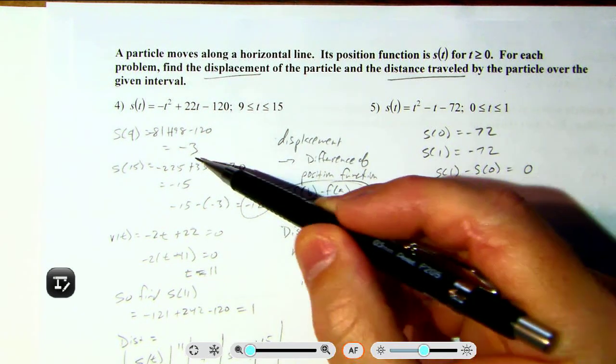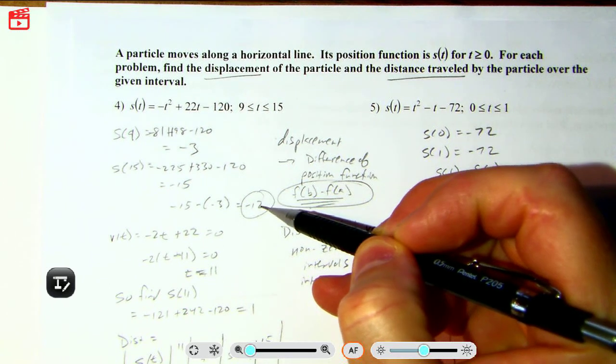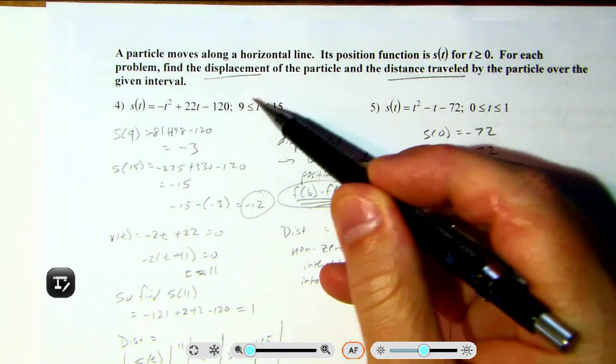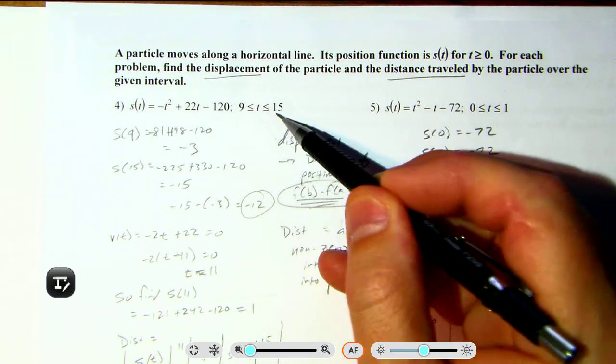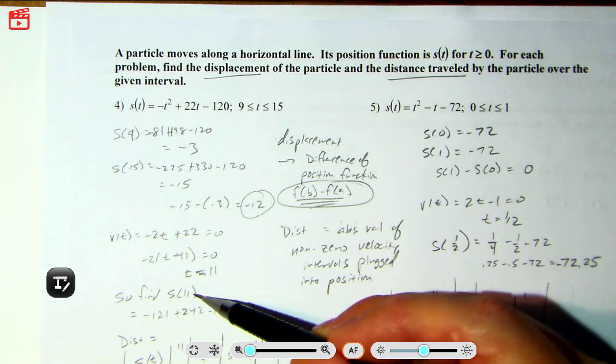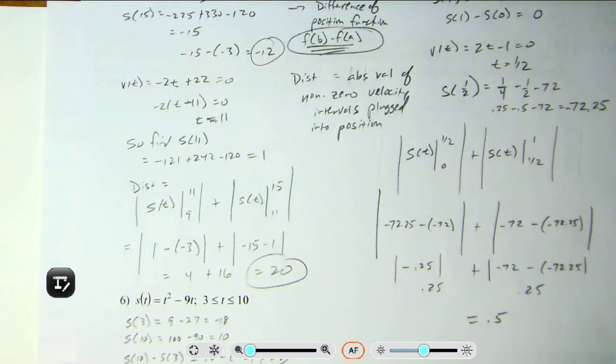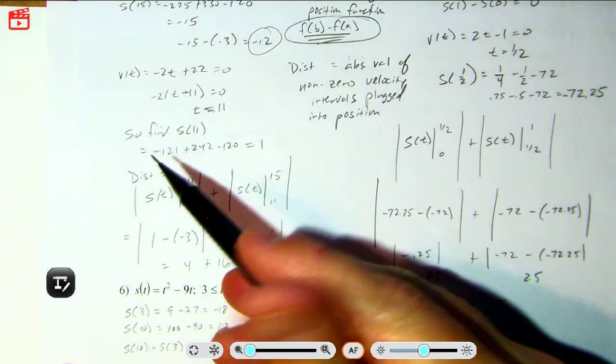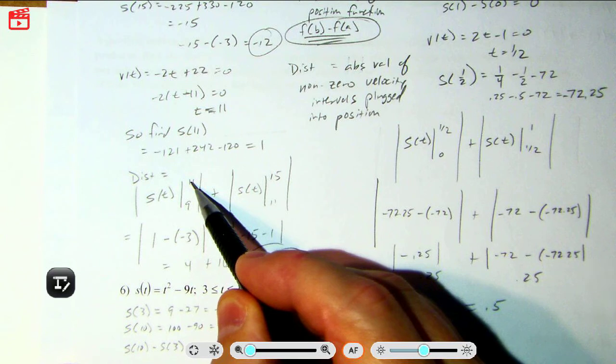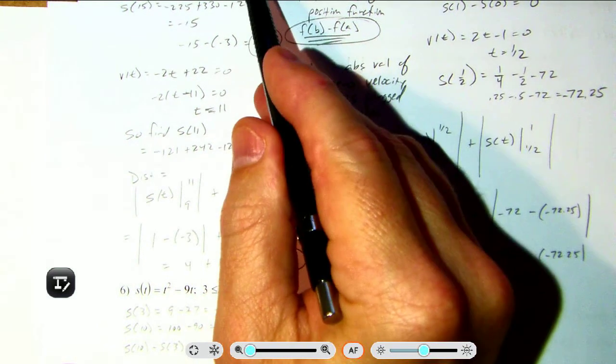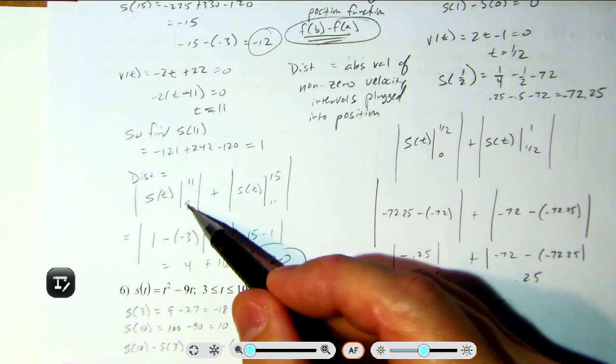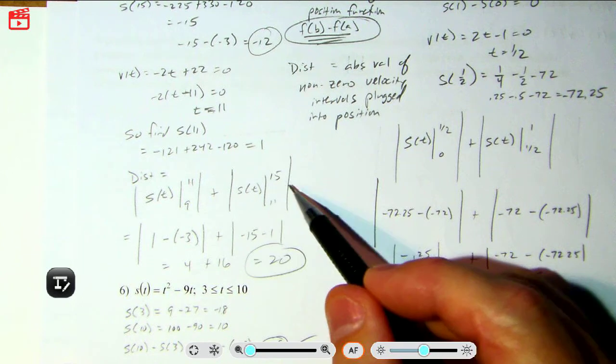All right, or I'm sorry, the interval is from 9 to 15, but the velocity is 0 at 11. All right, so that means we take the absolute value of each position function. So we take the position function from where it's 0 to the first half of the interval, 9, okay? And take the absolute value of that, and then add that to the other part of the interval, 11 to 15.